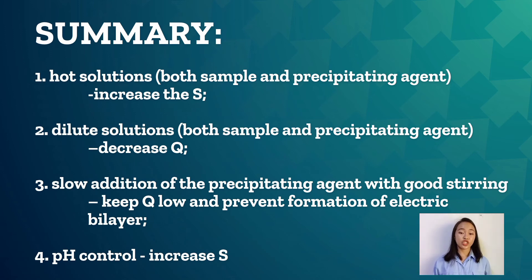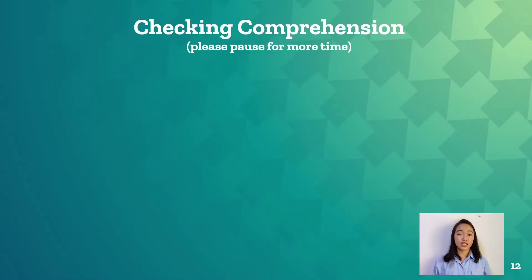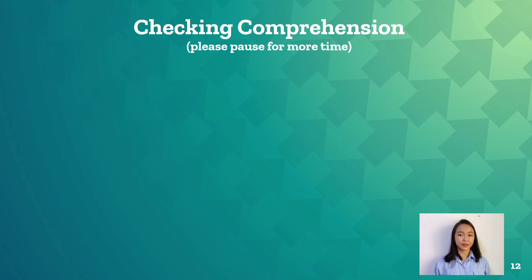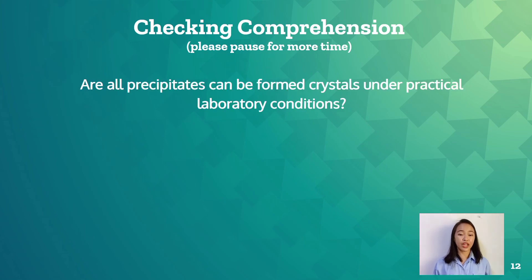And the third is slow addition of the precipitating agent with good stirring. This is done to keep the Q low and prevent formation of electric bilayer. And the last one is pH control. This is done to increase the solubility. Checking comprehension.